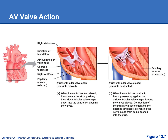When the ventricle contracts it creates significant pressure, slamming the AV valve closed. To prevent that high pressure from everting the AV valve back into the atrium, we have papillary muscles on the walls of the ventricles, attached via connective tissue called the chordae tendineae to the leaflets of the AV valves. When the ventricle contracts, it also contracts the papillary muscles, which pull on the chordae tendineae and prevent the valve leaflets from everting backwards and allowing blood to flow back into the atrium.